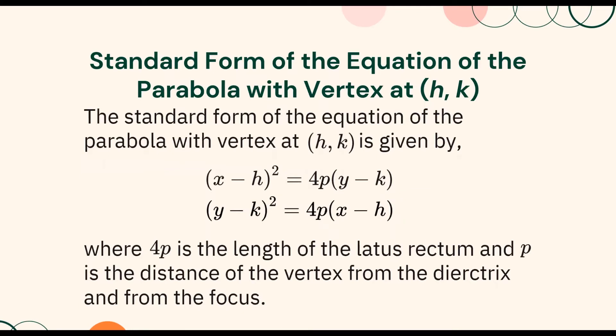Also, remember that the equation of the parabola in standard form is given by (x minus h)² equals 4p(y minus k), or (y minus k)² equals 4p(x minus h), where 4p is the length of the latus rectum and p is the distance of the vertex from the directrix and from the focus.